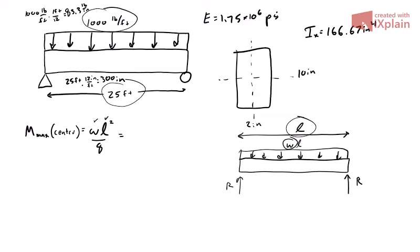We can plug in 83.3 pounds per inch times 300 inches squared all over 8, which gives us a max moment of 937,500 inch-pounds. If we check lesson 27, that's the same number we got for the max moment using our previous method of shear and moment diagrams. So that's good.